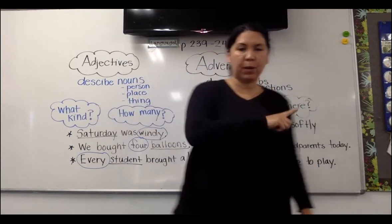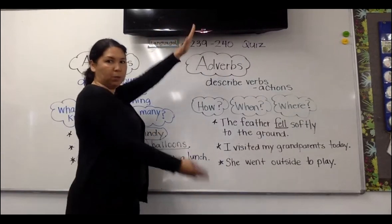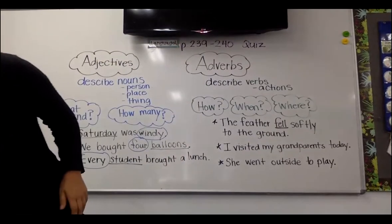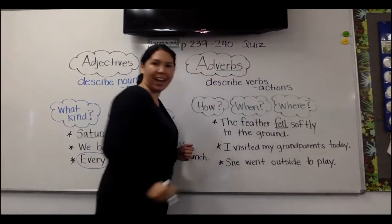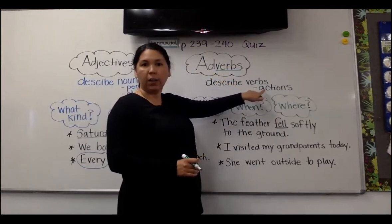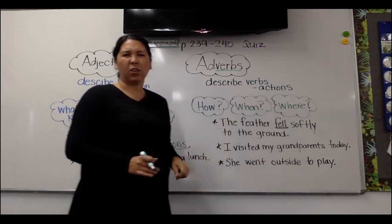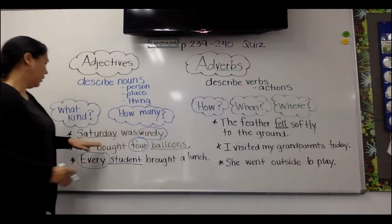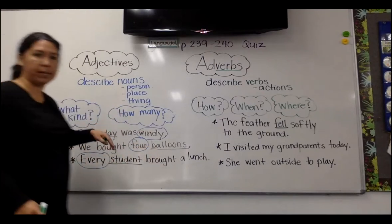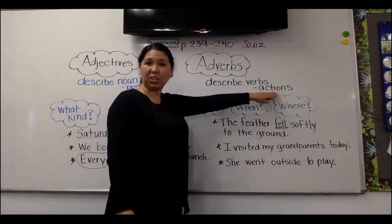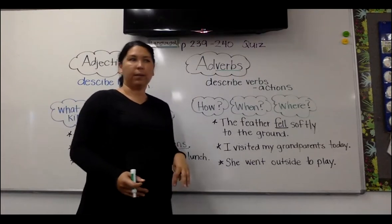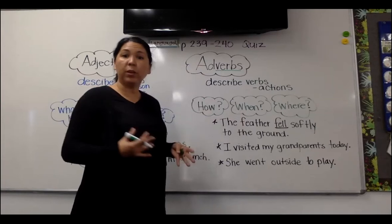So that is our adjectives — quick review. Adjectives describe nouns. They answer what kind or how many. Now, adverbs. Adverbs describe verbs. And verbs are what, third grade? Verbs are actions. So they're not describing days or balloons or students — those are all nouns, person, places, or things. Adverbs are going to describe actions: running, jumping, dancing, singing, looking — anything that you can do.